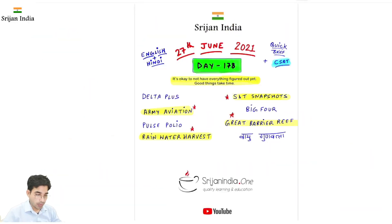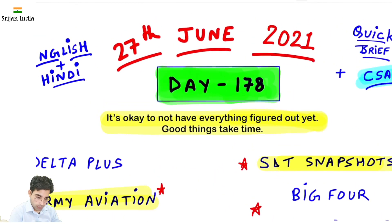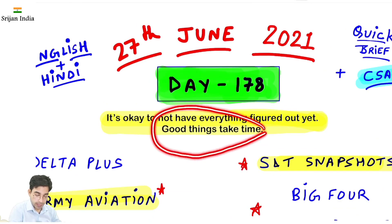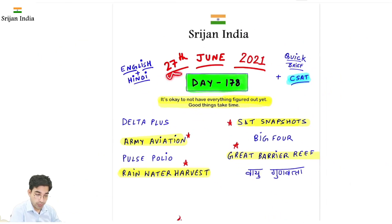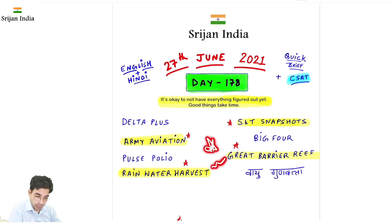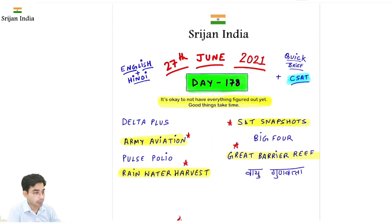Hi. It's okay to not have everything figured out yet. Good things take time — it takes time to build a palace. Today is 27th of June 2021. Let us have a quick discussion of all these important topics.